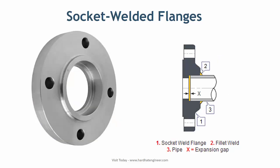Socket weld flanges have a female socket in which the pipe is fitted. Fillet welding is done from outside on the pipe. Generally, it is used in small bore piping and is only suitable for low pressure and temperature applications.